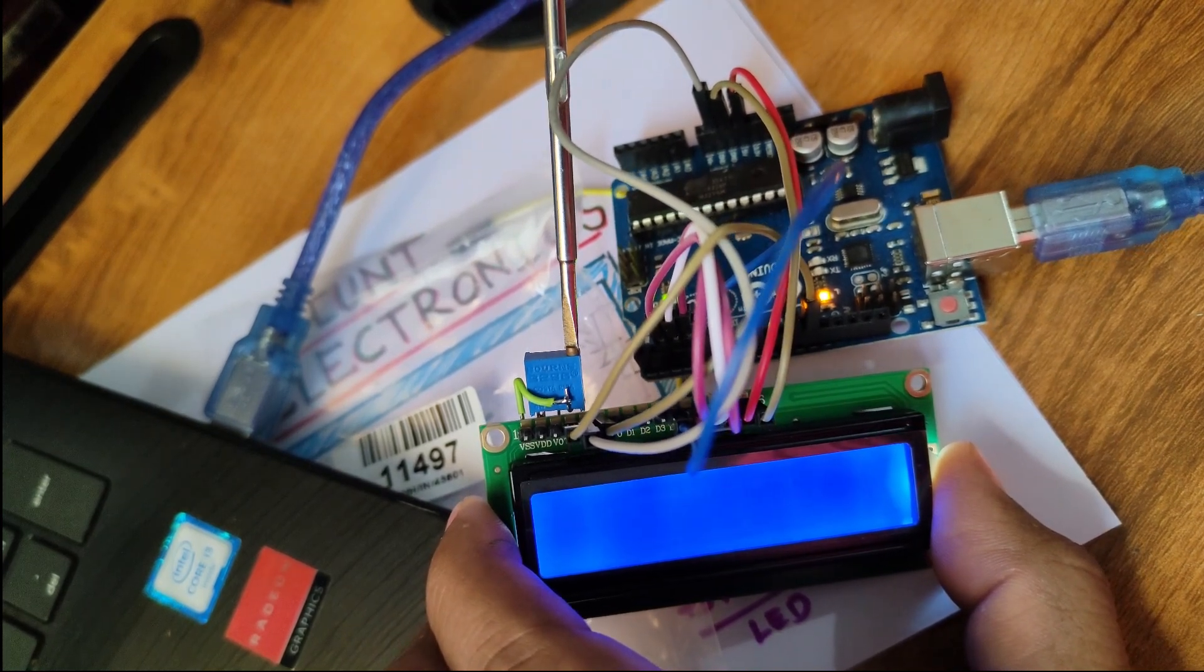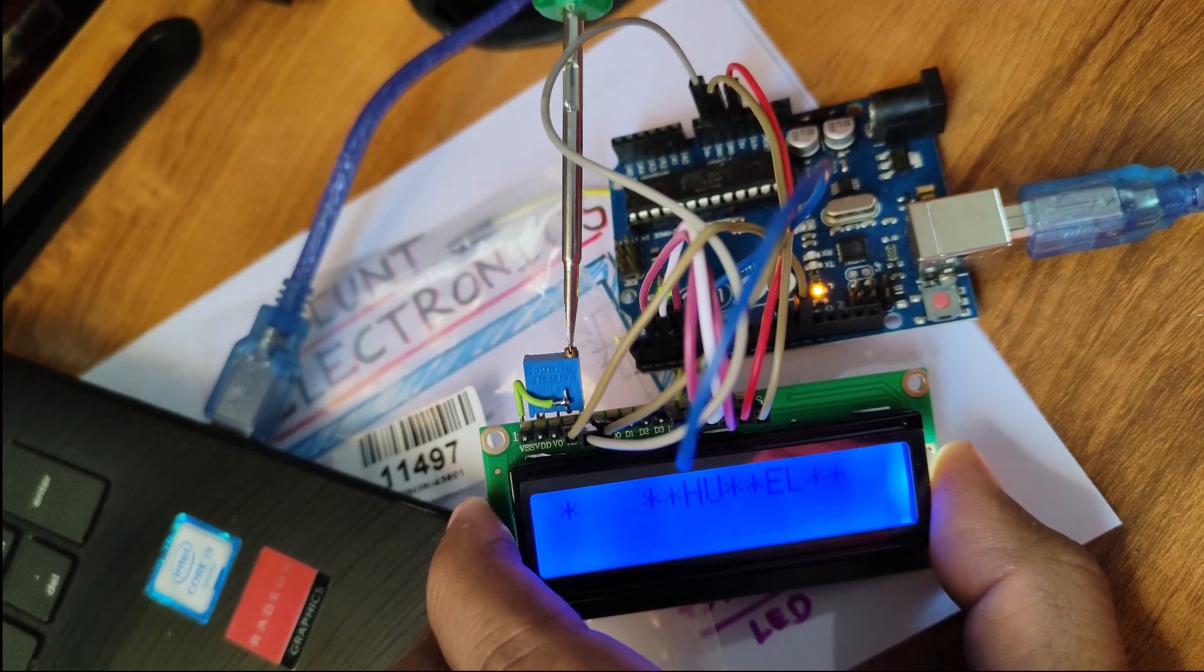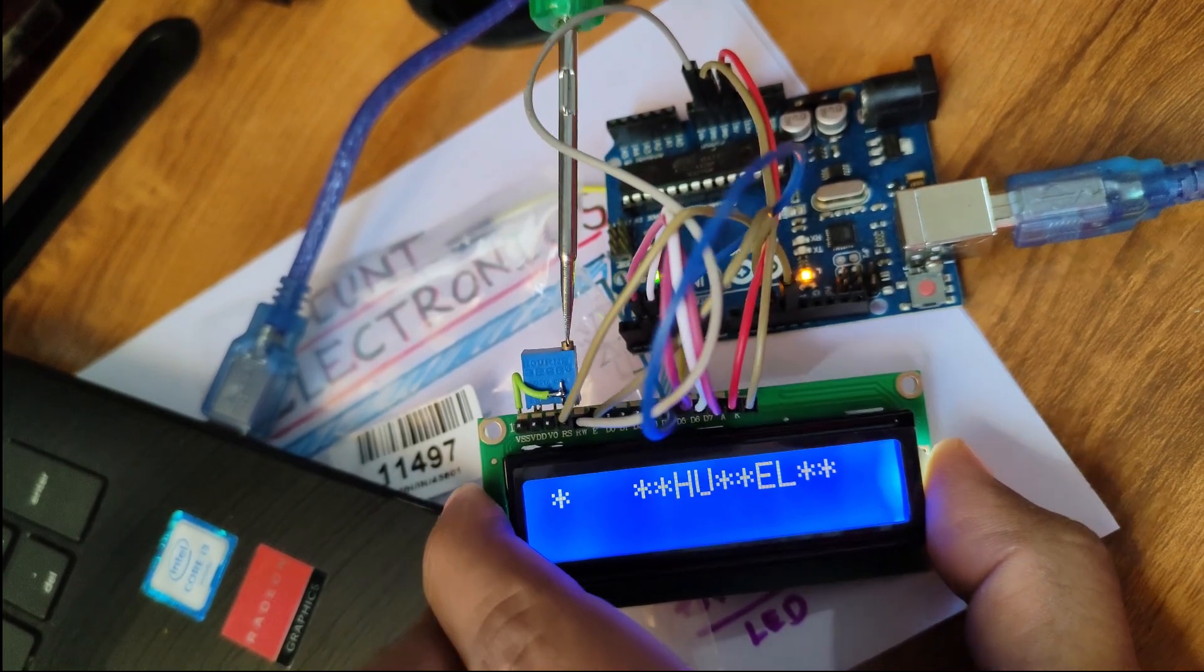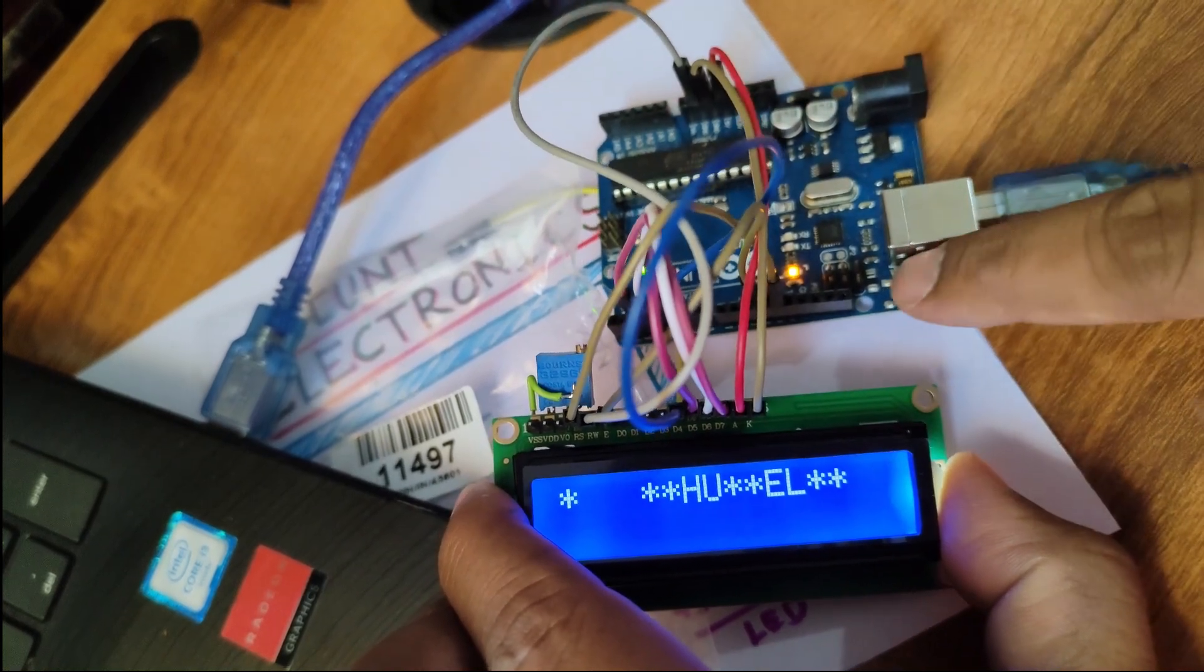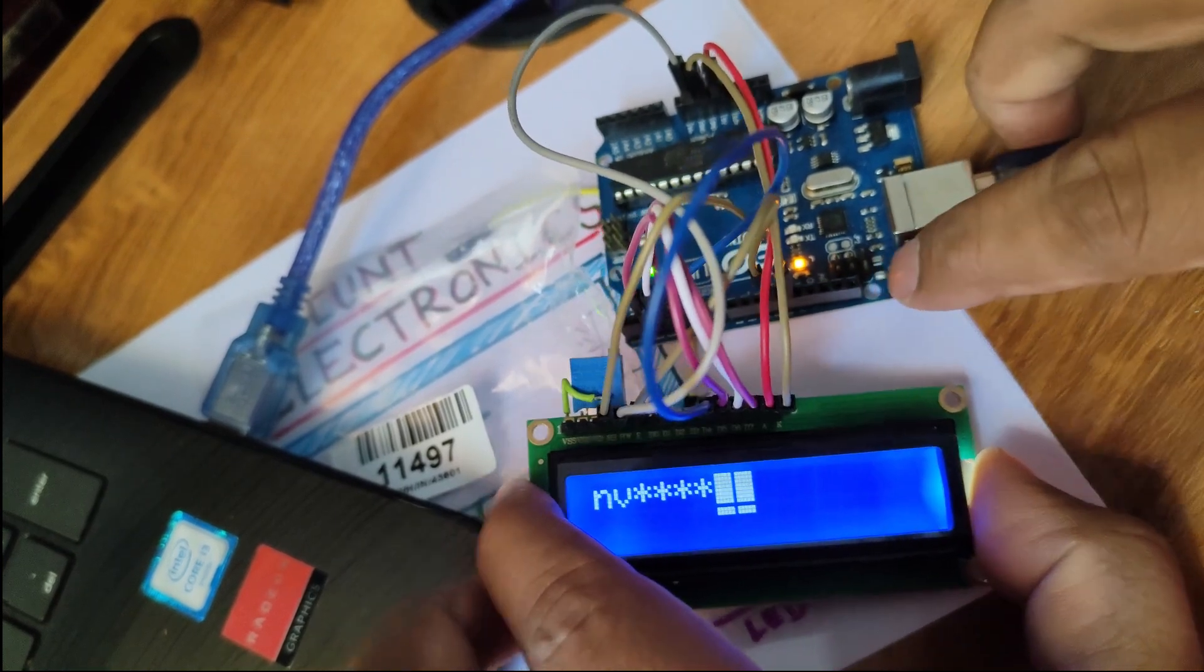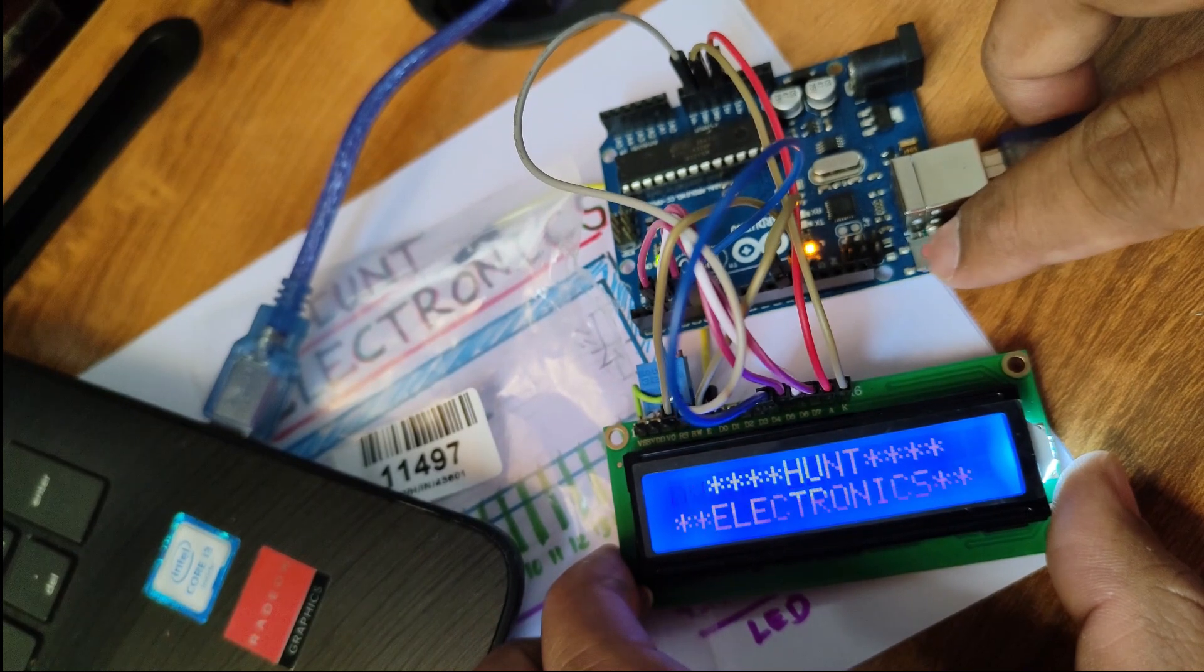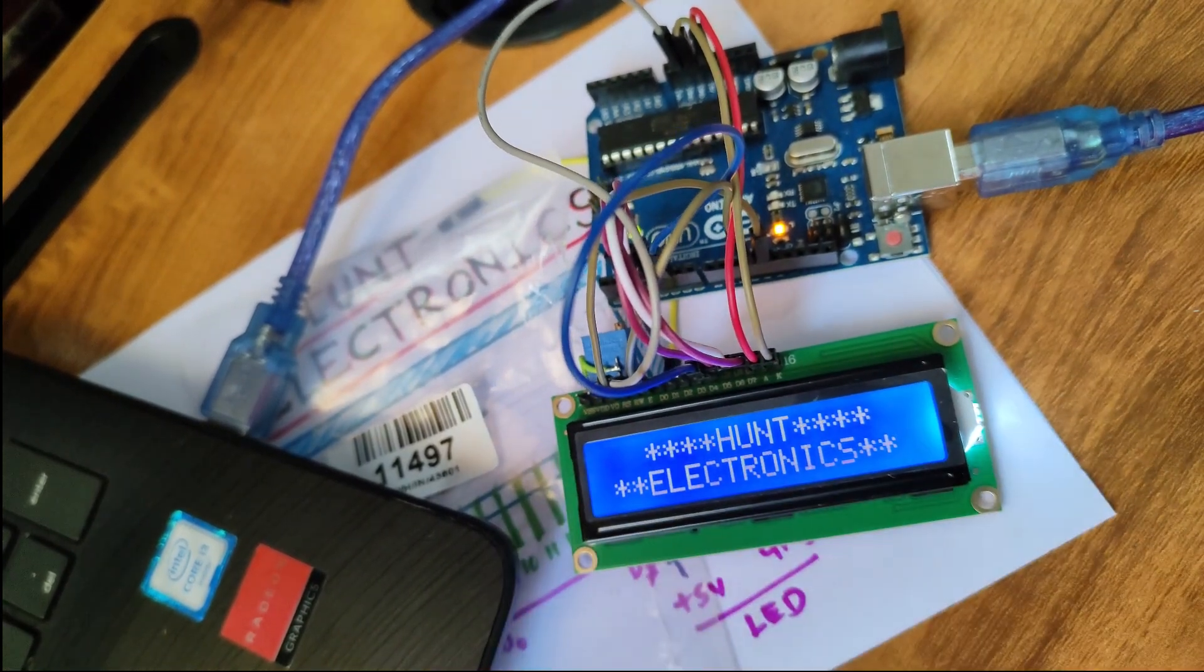Once we set this pot or preset, let us adjust this. Can you see that? Yes, let us set it. Yes, you can see - now it is displaying Hunt Electronics.